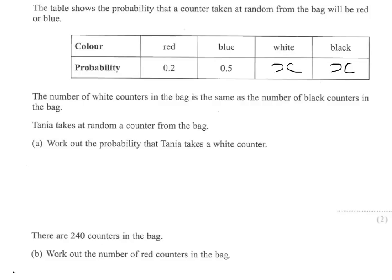Now we need to find the probability that Tania takes a white counter. We'll use the fact that, as these are all the colors in the bag, the probability of all possibilities comes to 1.